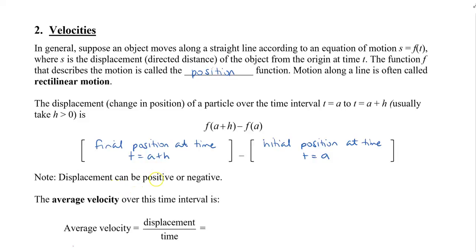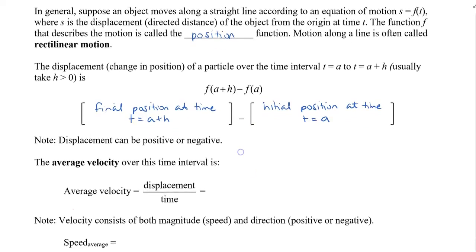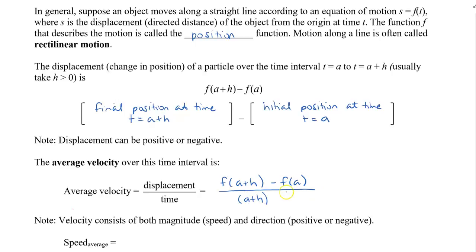The average velocity over this time interval is displacement divided by time. The displacement equals F of A plus H minus F of A — the new position minus the initial position. When I subtract them I get the displacement, all divided by my time minus my starting time. When you simplify this, you get F of A plus H minus F of A, all divided by H.